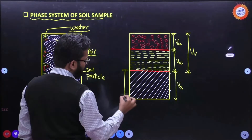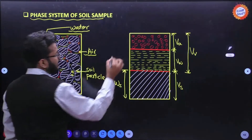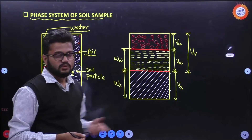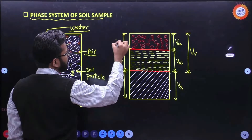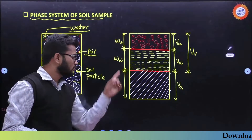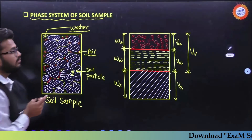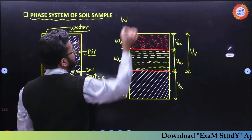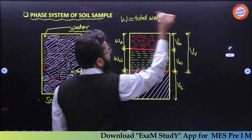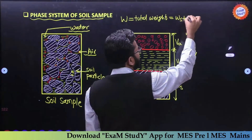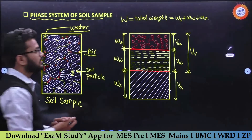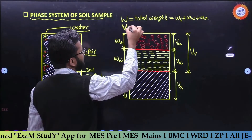Now regarding weight: the weight of soil particles is denoted Ws, weight of water is Ww, and weight of air is Wa. The total weight W of the sample equals weight of solid particles plus weight of water plus weight of air. The total volume V equals volume of solid plus total volume of voids.